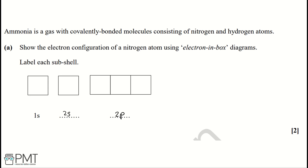Nitrogen is in group 5 and it has the electron configuration of 1s², 2s², 2p³. Filling our orbitals, we'll have 2 electrons with opposite spin — that's the two half arrows going in opposite directions — because electrons repel each other and go in opposite directions. Our 2s² and then our 2p³.